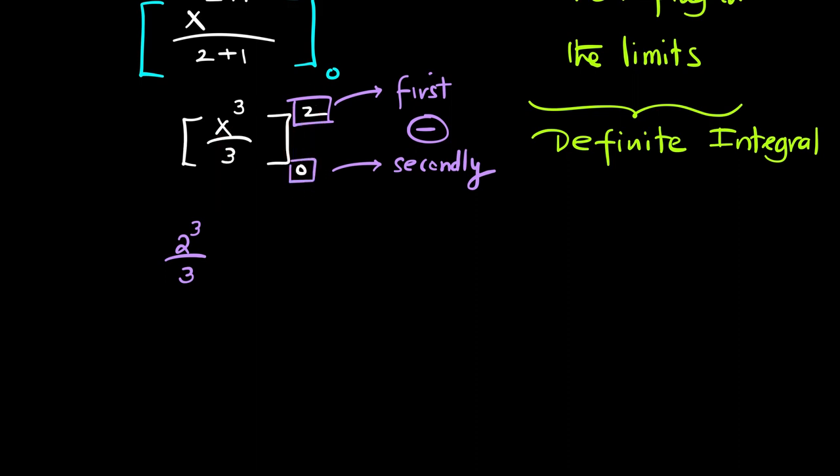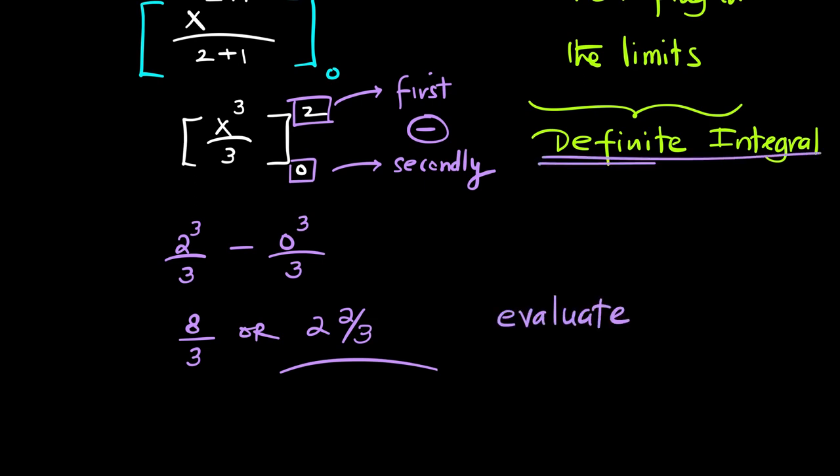Similarly, now 0 will be placed in place of x and this simplifies to 8 over 3 which can be written as a fraction 2 whole 2 third. That's how a limit is used to evaluate a definite integral.